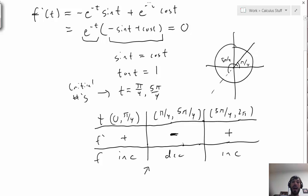That tells you that here at π over 4, we're increasing and then decreasing, so this is a local max. And then here, we're decreasing and then increasing, which means that this is a local min.